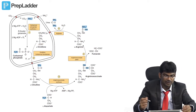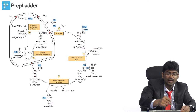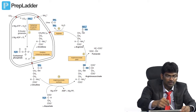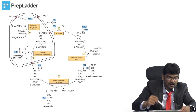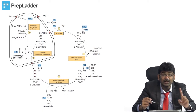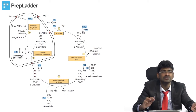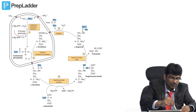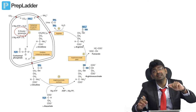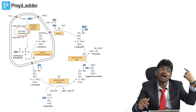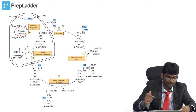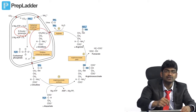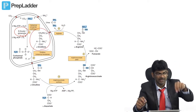Let us briefly see the urea cycle. Ammonia is released by the glutamate dehydrogenase reaction. That ammonia reacts with CO2 to produce carbamyl phosphate — this is the CPS1 reaction. CPS1 is in the urea cycle; CPS2 is for pyrimidine synthesis. CPS1 is activated by N-acetylglutamate, and the N-acetylglutamate synthase enzyme is activated by arginine. Then carbamyl phosphate reacts with ornithine to produce citrulline — these two reactions happen inside the mitochondria.